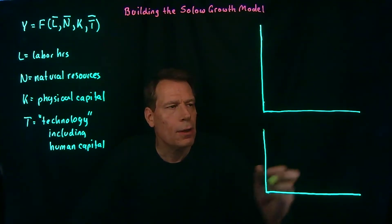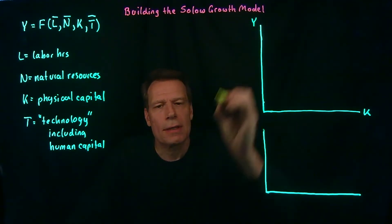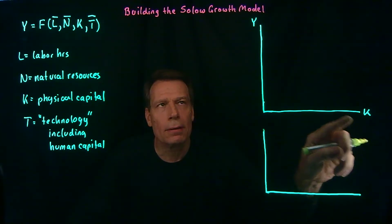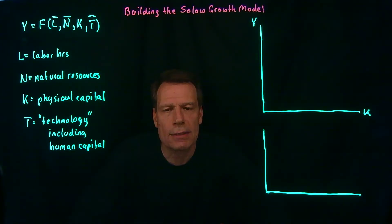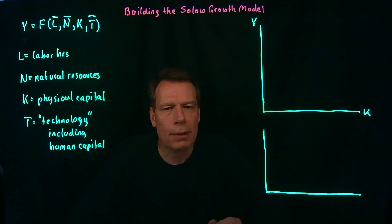We can put capital on one axis and Y, GDP, on the other axis. What's the relationship between the level of capital and the natural level of GDP if we hold labor, natural resources, and technology fixed? This takes us back to the law of diminishing marginal product, which says that if we add additional increments of an input like capital and hold everything else fixed, those additional increments will yield less and less additional output.